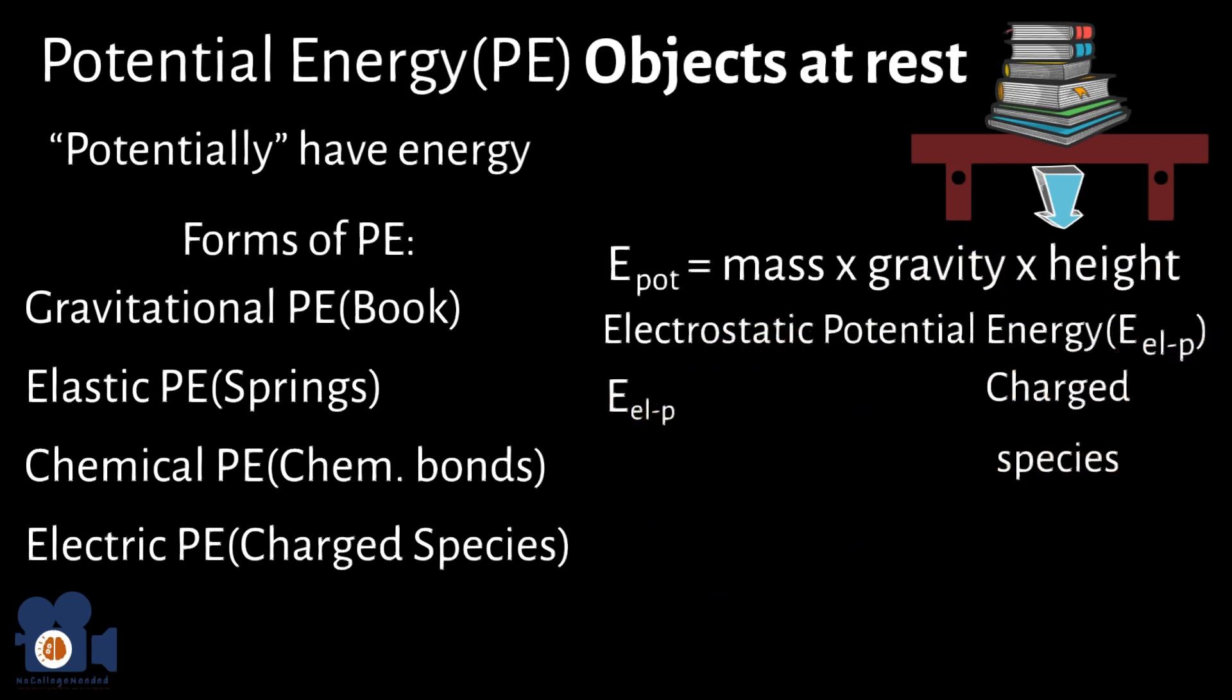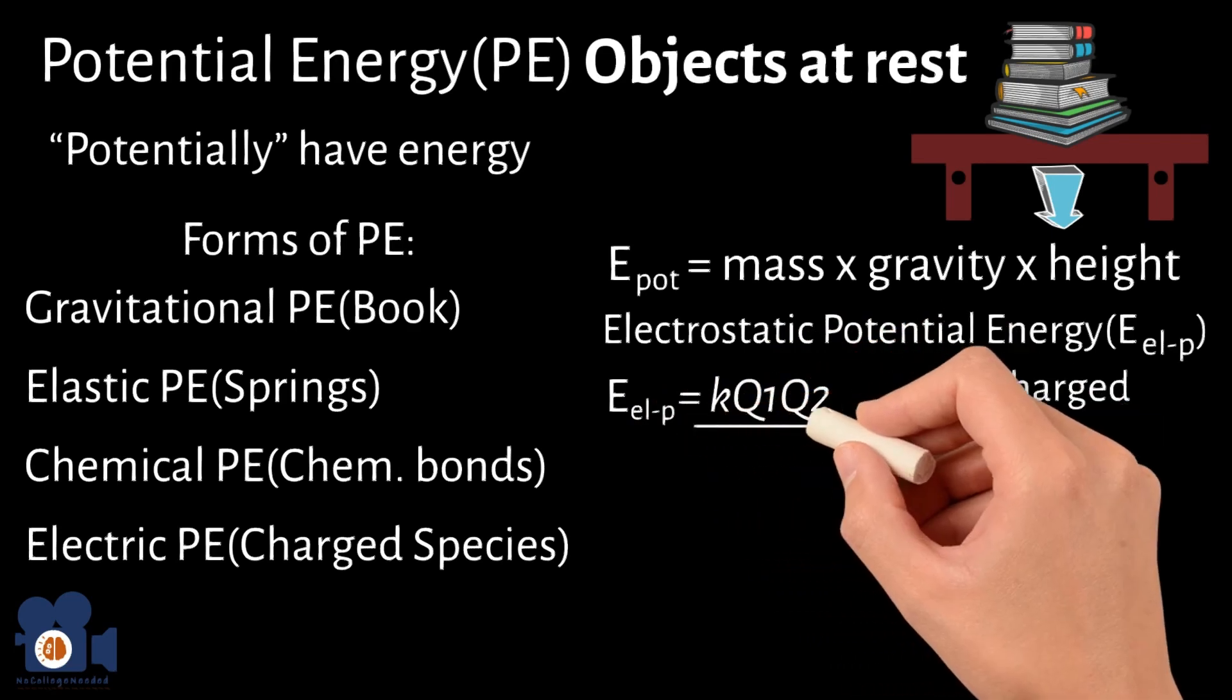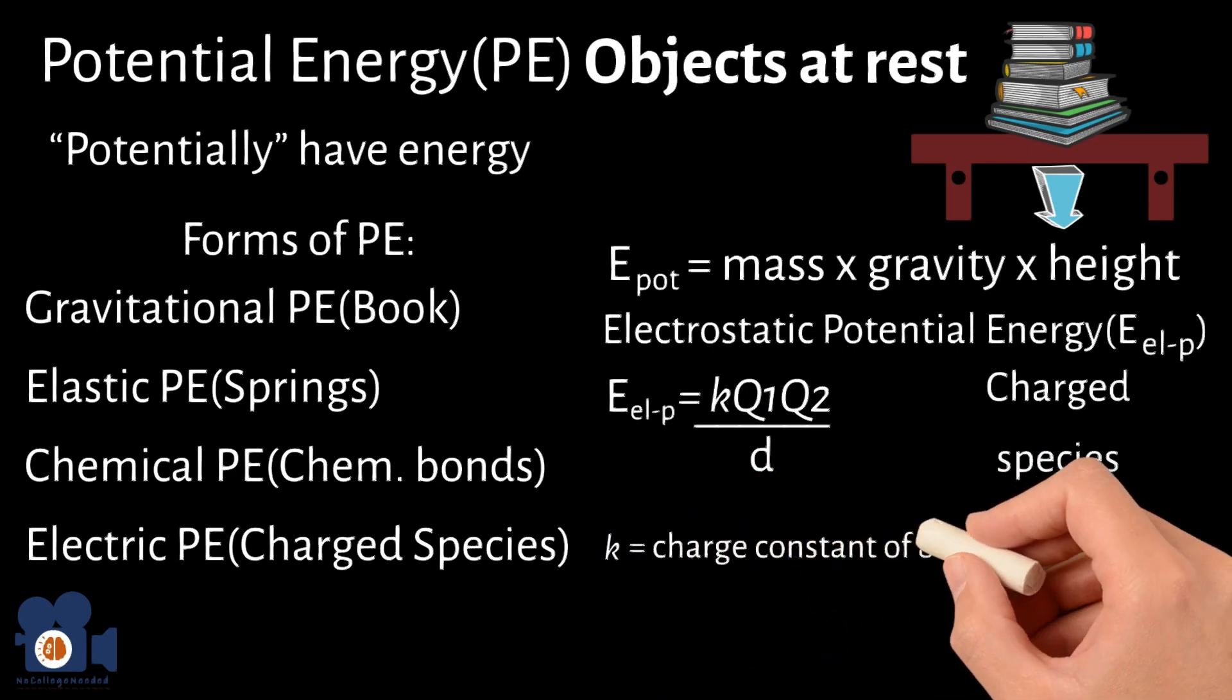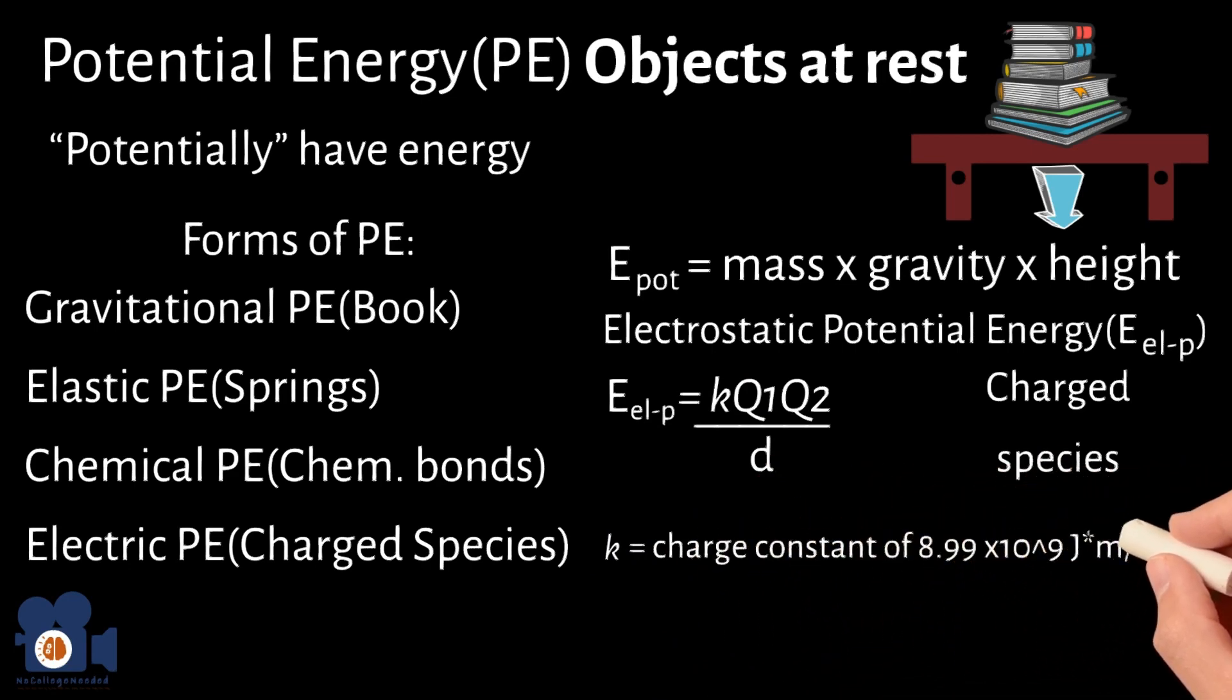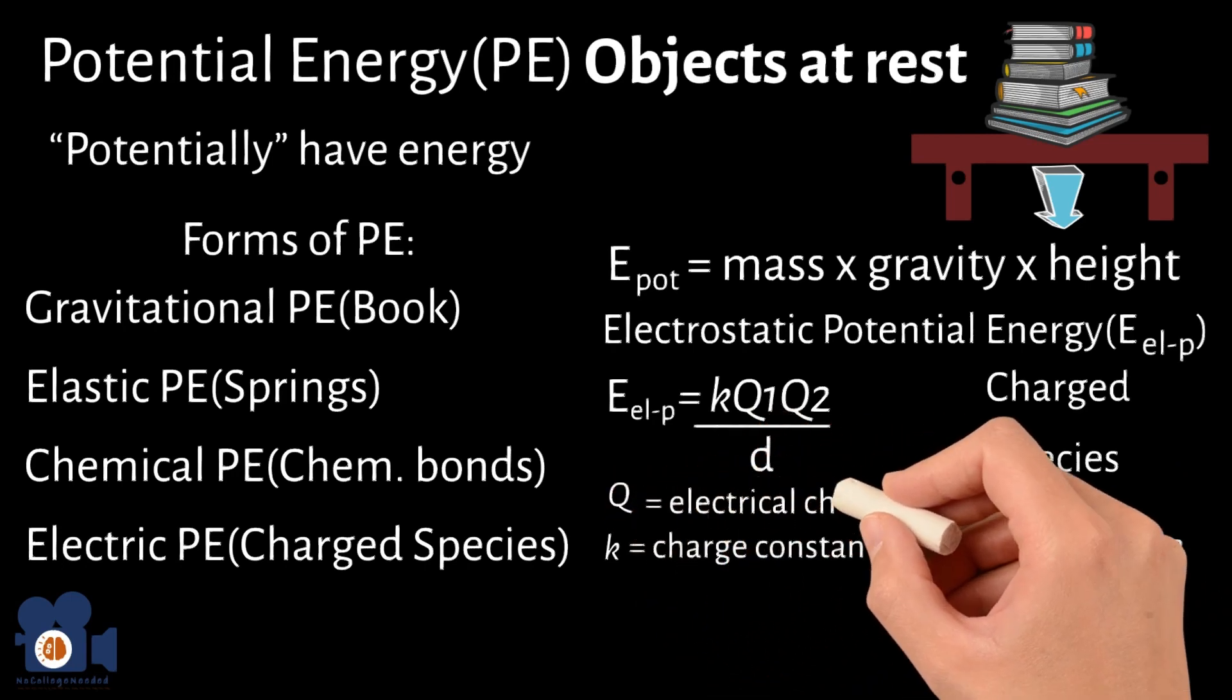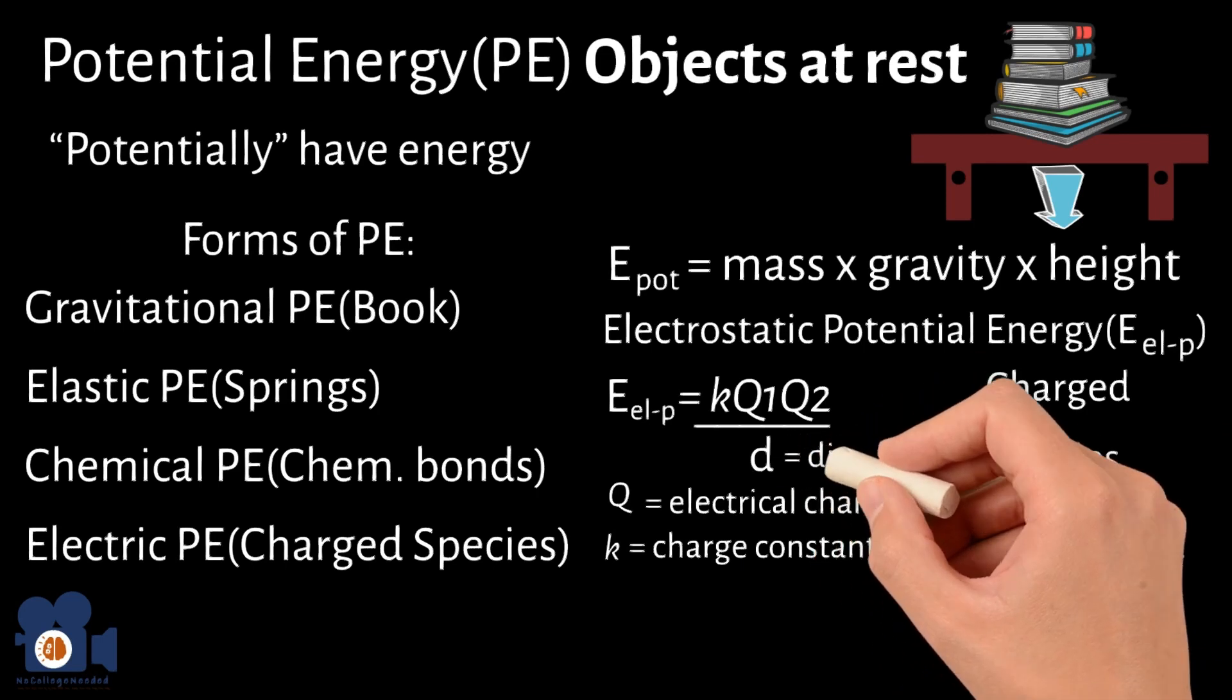And the equation is EPE equals K times Q1 times Q2 divided by D, where K is a charge constant of 8.99 times 10 to the 9th joules times meters divided by coulomb squared. Q1 and Q2 are the electrical charges of the specific species you look and calculate, and D is the distance between the species.